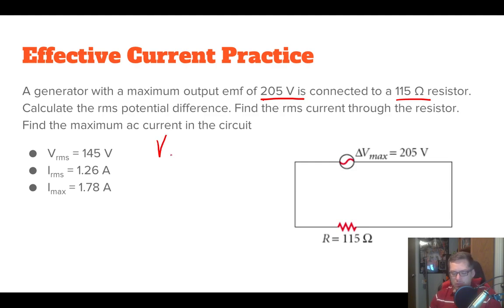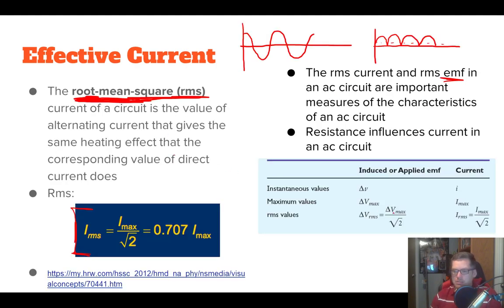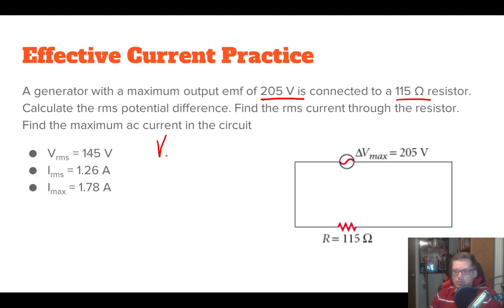All right. So first step says calculate the RMS potential difference. Well, we know from before this formula we just had right here that the V_RMS is equal to the V_max over the square root of two. So the V_RMS is equal to the V_max divided by the square root of two or the 0.707 times the V_max. Our V_max is right here 205, right? It says 205. So we take 205 divided by the square root of two. So we go 205 divided by square root of two. And we get 145 volts.